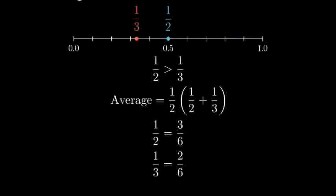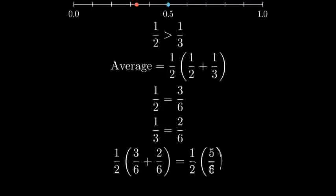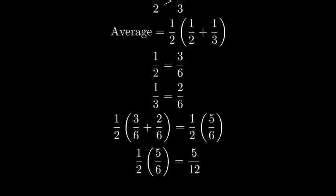One-half equals three-sixths, and one-third equals two-sixths. Now we can add the fractions inside the parentheses. Three-sixths plus two-sixths equals five-sixths. Finally, we multiply by one-half. Five-sixths times one-half equals five-twelfths.